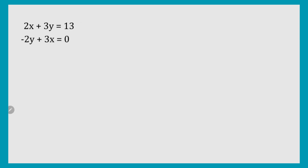Moving on to the second example: 2x plus 3y equals 13, and negative 2y plus 3x equals 0. Again, I'm going to label the two equations. You can see the format of the equations is different from the first example, so I'm going to rewrite the second equation so that the x is first and the y is second.